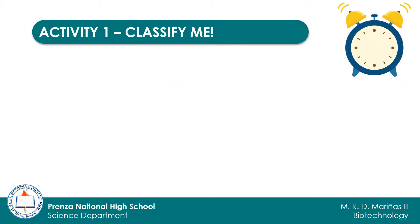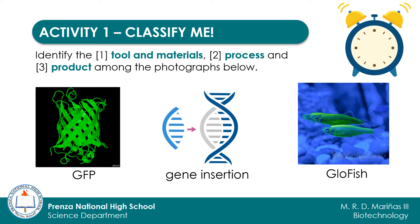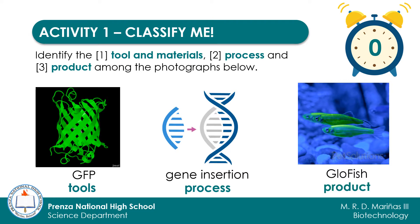Let us now move on to the next set. Classify green fluorescent protein or GFP, gene insertion, and glowfish into tools and materials, process, and products. The answer is: GFP is a tool or a material, while gene insertion is a process and glowfish is a product.